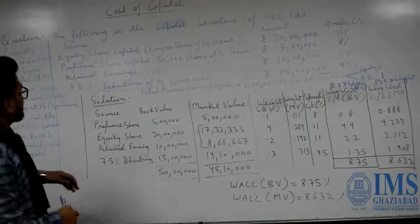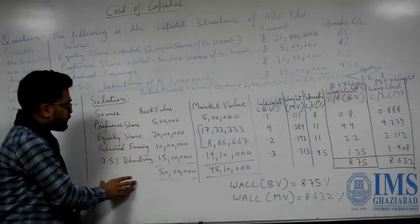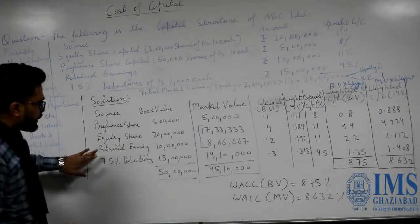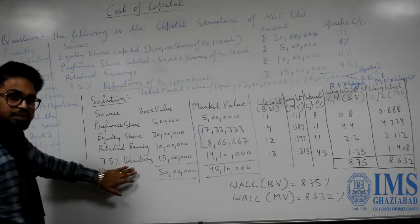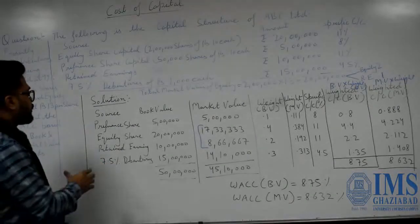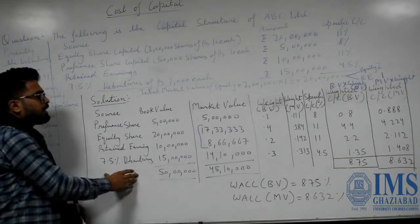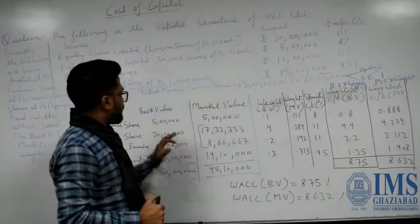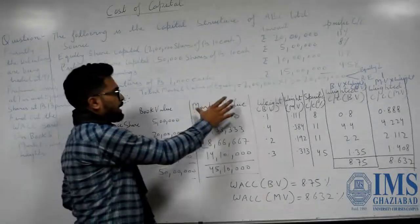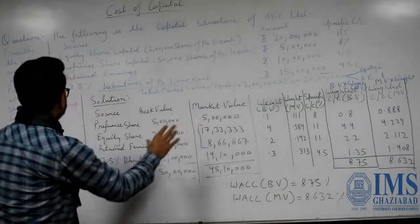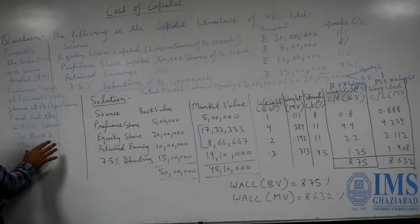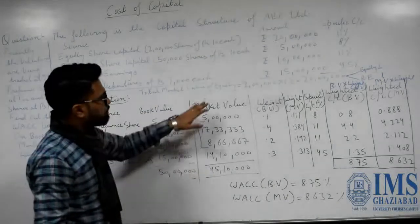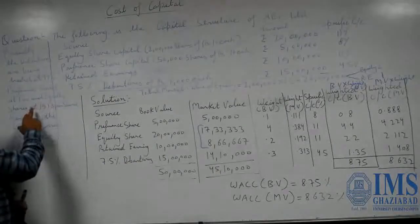Here is the presentation. First of all, we should write the sources from where we raise funds: equity shares, preference shares, retained earnings, and 7.5% debentures (that is the interest rate). Book value is already given in the question, so we write book value. We also need market value, because we have to solve the question using both book value and market value methods.